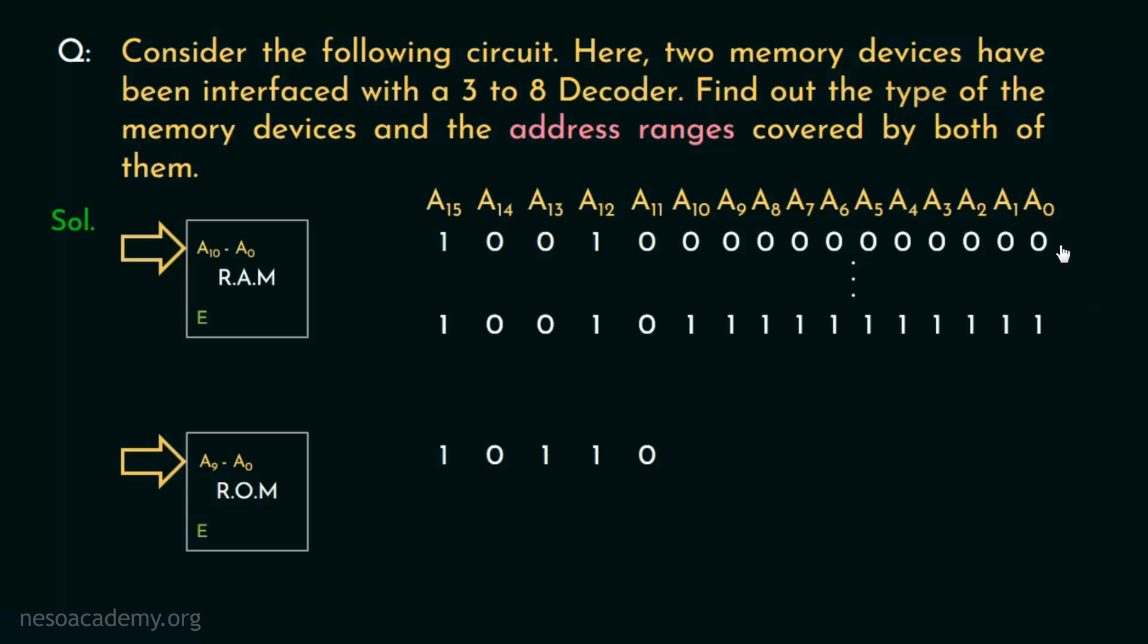Now we all know we will have to group 4 bits from the least significant bit towards the most significant bit. So 1001 is actually 9 and the rest are clearly zeros. Now what about the last address? Same drill. First, we will group them from the LSB to the MSB. That gives us this one as 9 again. Then 0111 is actually 7 and all ones is actually 15. But in hexadecimal, we use F to represent 15. And the same goes for this one as well. So the RAM covers the addresses 9000 to 97FF.